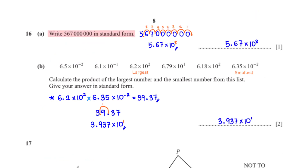Write 567 million in standard form. To write this number in standard form, we move the decimal point to a position after the first non-zero digit, which is 5, giving 5.67. Since we moved the decimal point 8 units to the left, we multiply by 10 raised to the power 8, giving 5.67 times 10 to the power 8.